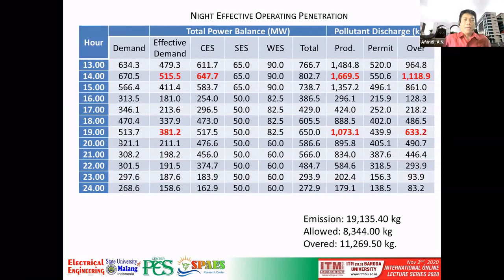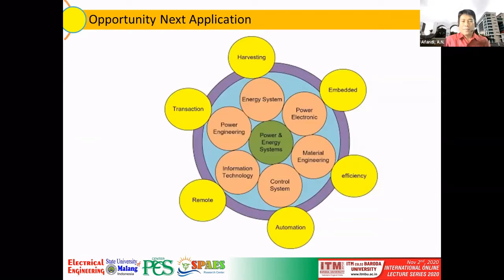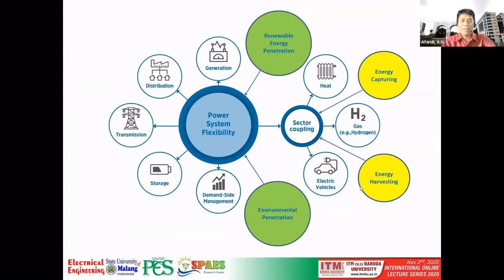The next important opportunity is the application based on our research. We can apply the salmon algorithm to many topics, especially in the power and energy system, which is my own expertise. You can also apply it to other areas or topics based on the current issues in the power system. This graph is very important to show where the potential applications are.